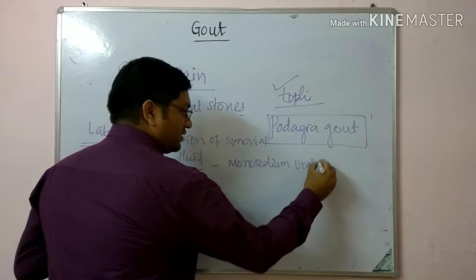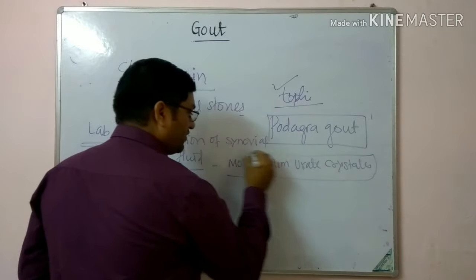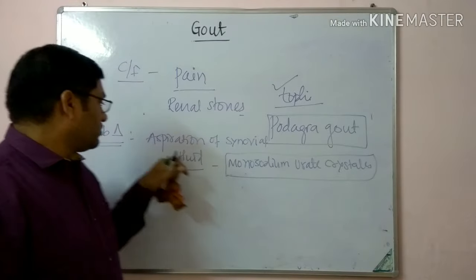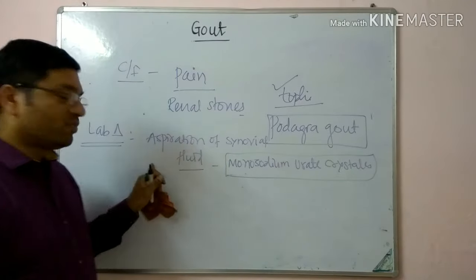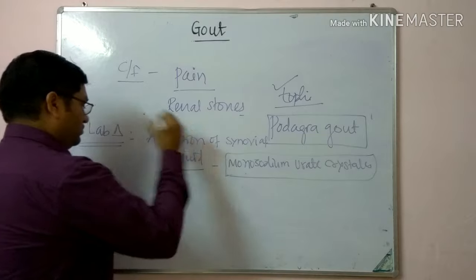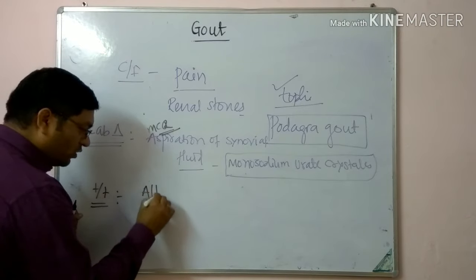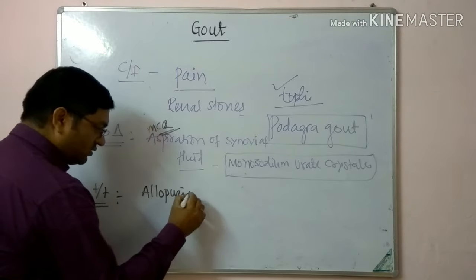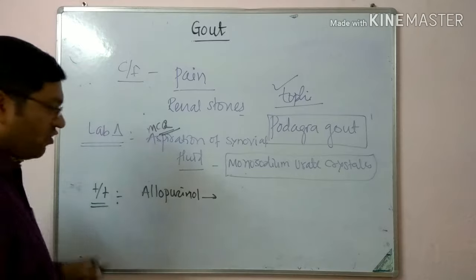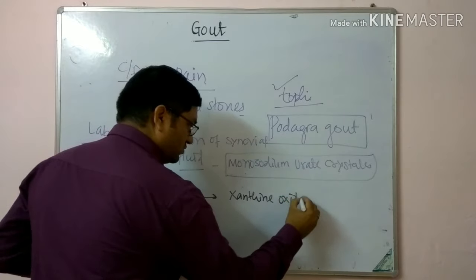For laboratory diagnosis, the confirmatory test is aspiration of synovial fluid and demonstration under the microscope of monosodium urate crystals. These are negatively birefringent crystals of monosodium urate seen under the microscope. Aspiration of synovial fluid is the confirmatory test and is an important MCQ point.